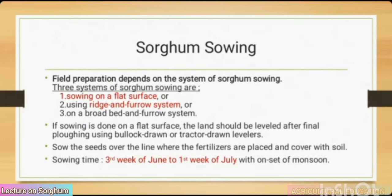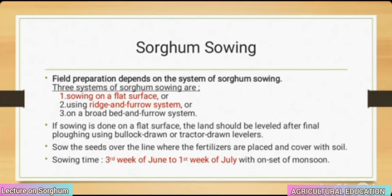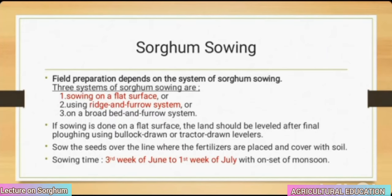Sowing field preparation depends on the system of sorghum sowing. Three systems are: sowing on a flat surface, using a ridge-furrow system, or on a broad bed and furrow system. If sowing is done on a flat surface, the land should be leveled after final plowing using a bullock-drawn or tractor-drawn wheel leveler. Sow the seeds over the line where fertilizers are placed and cover with soil. Sowing time: third week of June to first week of July with onset of monsoon.